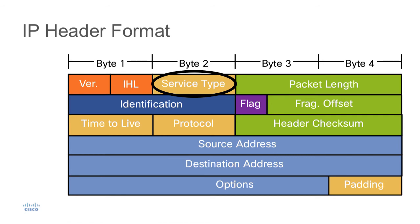The next field is the service type, or TOS — type of service field. This is an 8-bit field. In traditional networking, three of those bits are used as an IP precedence value for providing quality of service. Nowadays, we use differentiated service code points, or DSCP, which uses 6 bits of that field, with the remaining two bits used for explicit congestion notification. Using DSCP rather than IP precedence provides a larger number of differentiations between packets, allowing different levels of service.